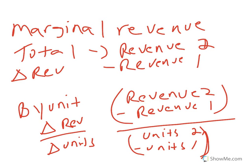Marginal revenue follows a similar methodology to calculate it both on a total and on a per unit basis. Total marginal revenue is simply the change in revenue from one option to the next — calculated by taking the total revenue of the second option and subtracting the total revenue of the first option. To calculate marginal revenue by unit, you divide that difference by the change in units, or delta quantity, between the two options. In economics and finance, we use the Greek symbol delta, the triangle, to signify a change — an addition or subtraction from one option to the next.